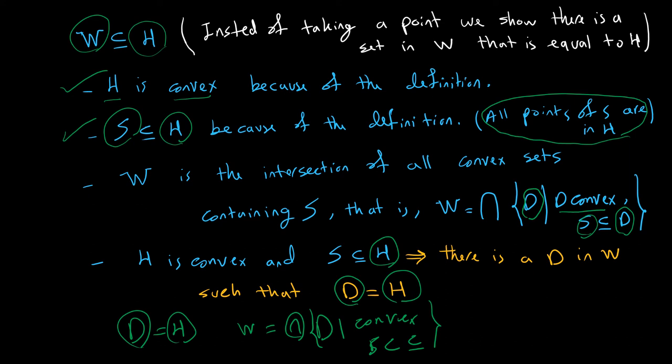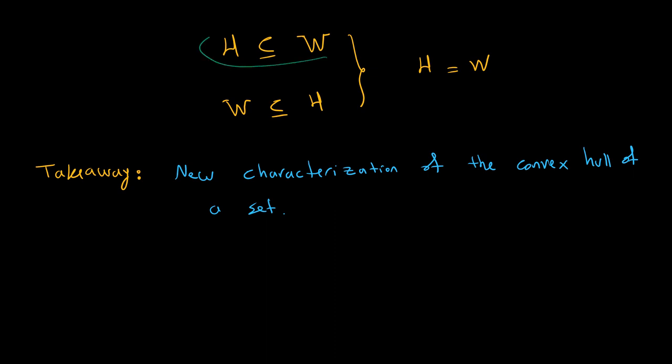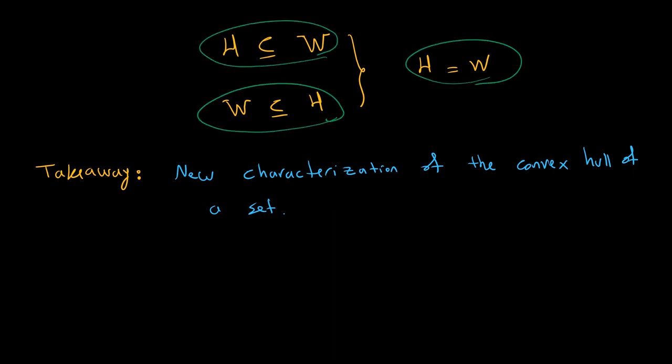We are almost done. We showed that H ⊆ W and W ⊆ H, therefore H equals W. The takeaway of this problem is that we have just shown a new characterization for the convex hull. Originally, the convex hull was defined as the set of all convex combinations of points in S. Now we have shown that the convex hull is equivalently the intersection of all convex sets that contain S.